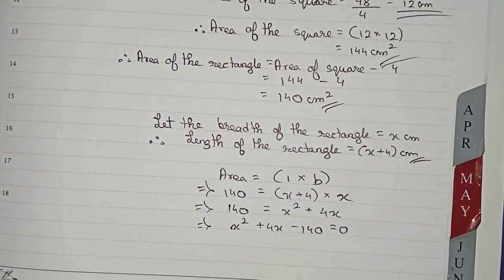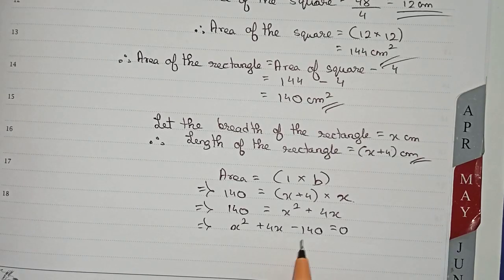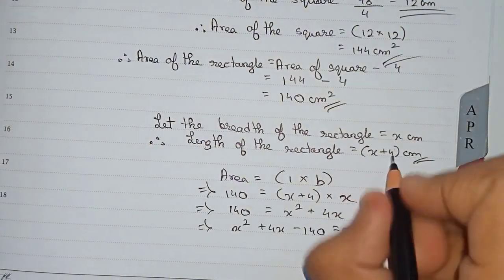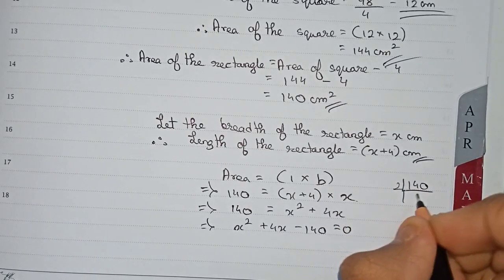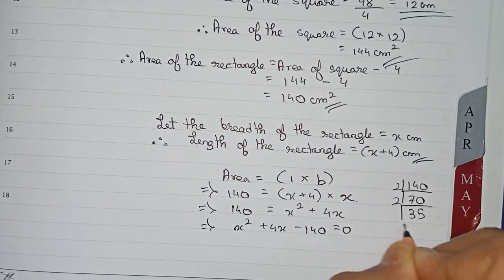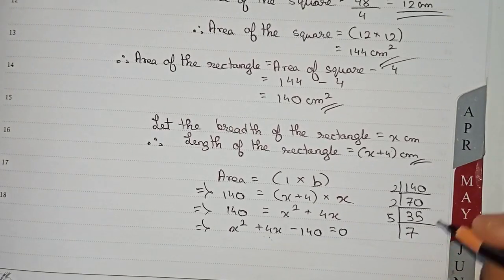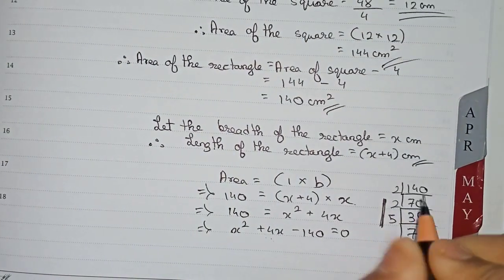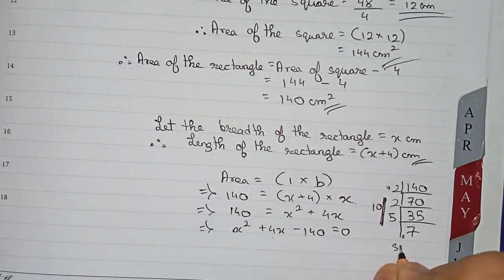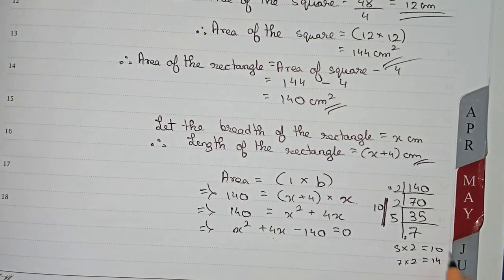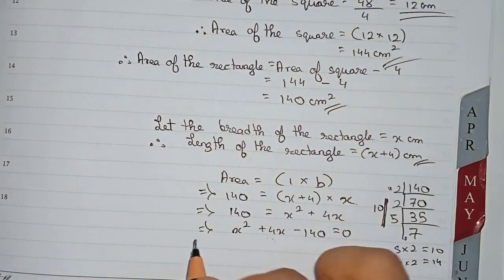To solve this, we have to break 4x into two parts such that they give 4x when added or subtracted, and 140 when multiplied. For that we do the prime factorization of 140: 140 = 2 × 70 = 2 × 2 × 35 = 2 × 2 × 5 × 7. So 5 × 2 = 10 and 7 × 2 = 14. Then 14 minus 10 gives 4x.